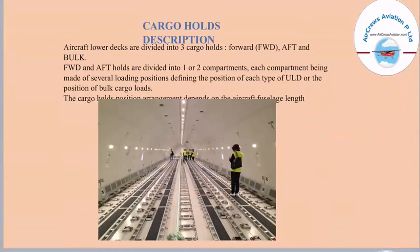To transport cargo into an aircraft, different kinds of holding devices are needed. An aircraft's lower decks are usually divided into three cargo holds: the forward, the after, and the bulk. The forward and after holds are divided into one or two compartments, each compartment being made of several loading positions defining the position of each type of ULD or the position of bulk cargo loads. The cargo load position arrangement usually depends on the aircraft's fuselage length.